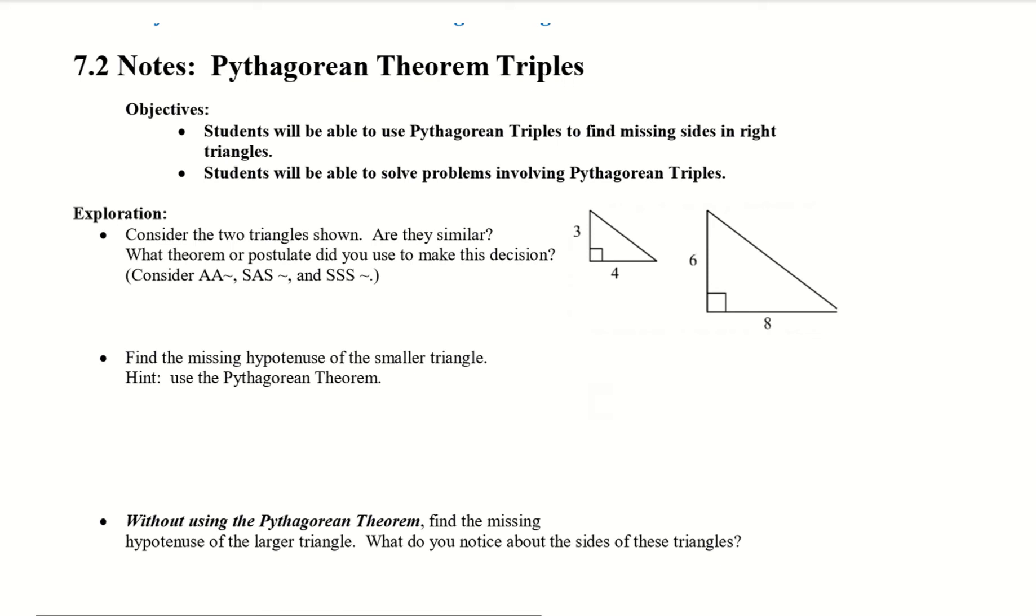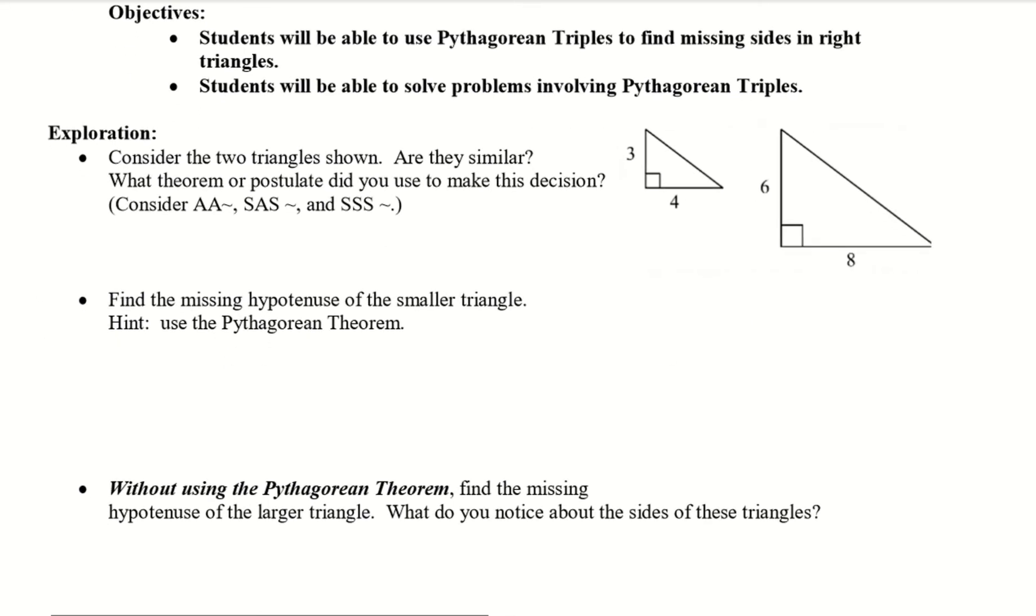Alright, so let's go ahead and take a look at this exploration. Consider the two triangles shown. Are they similar? What theorem or postulate did you use to make that decision? So if we take a look at our options here, let's go ahead and create a couple of proportions to double check that.